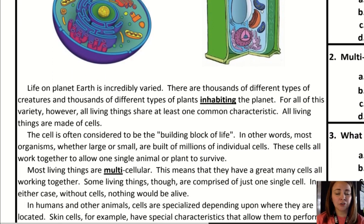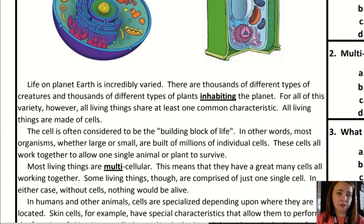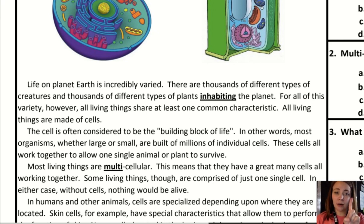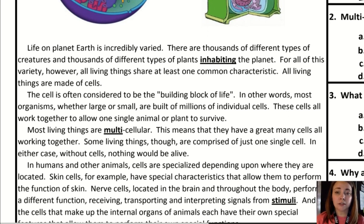Life on planet Earth is incredibly varied. There are thousands of different types of creatures and thousands of different types of plants inhabiting the planet. For all of this variety, however, all living things share at least one common characteristic: all living things are made of cells. The cell is often considered to be the building block of life. Most organisms, whether large or small, are built of millions of individual cells.